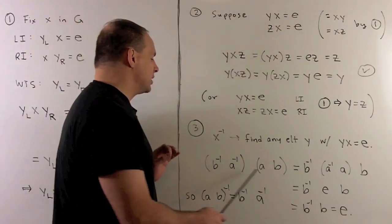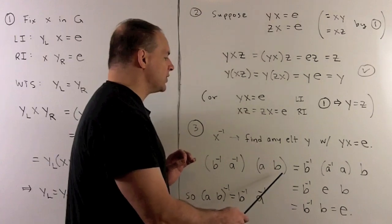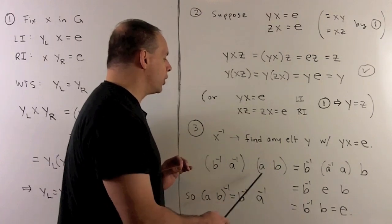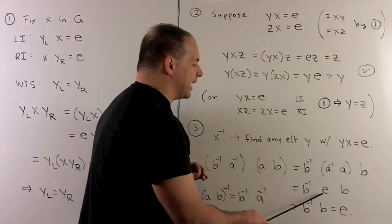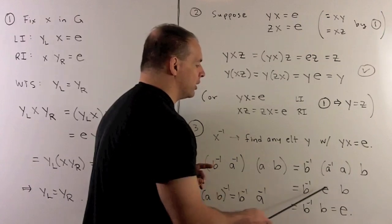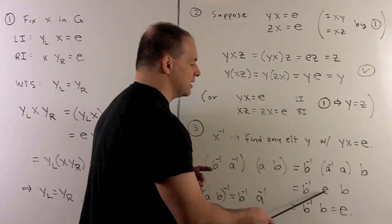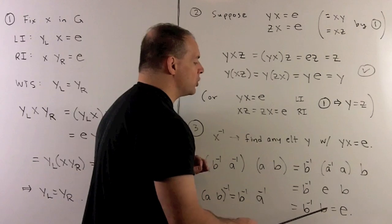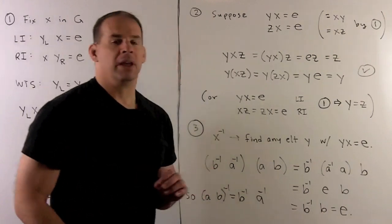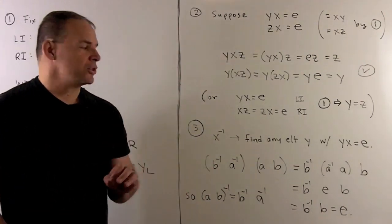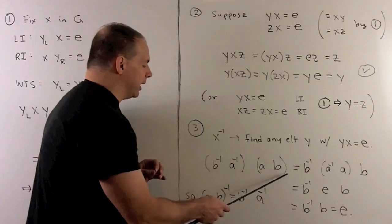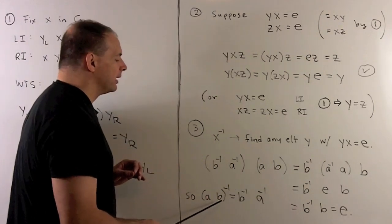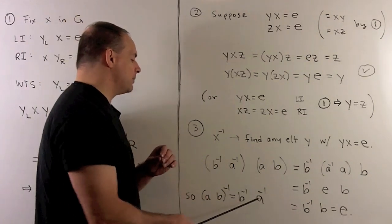Now, by associativity, we can ignore the parentheses. So, we'll look at the middle terms. This collapses to the identity. Then, we can push this onto either one of these terms, and get the same thing. So, I have B inverse B equal to the identity, and that's what we were looking for. So, that says the inverse of AB, which we write this way, is equal to B inverse times A inverse.